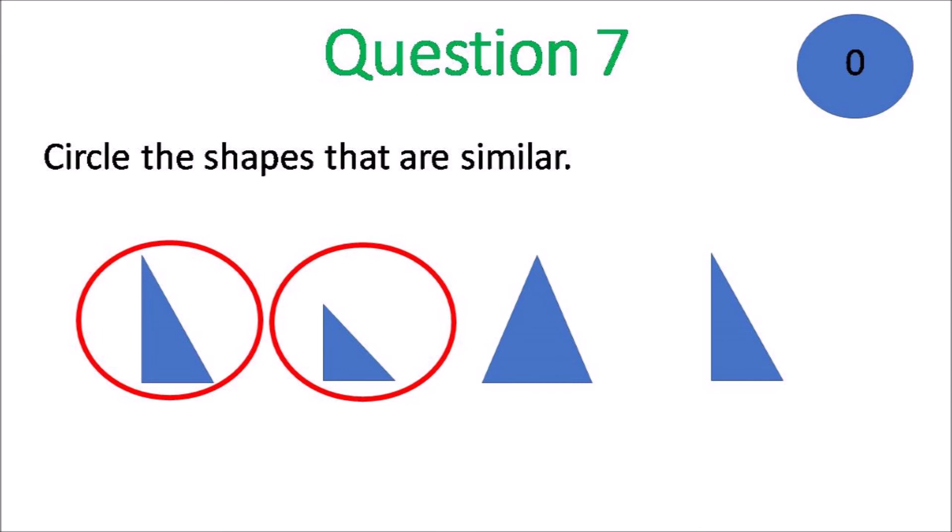Circle the shapes that are similar, it would be the first two, those two are right angle triangles. It cannot be the last one because that would be congruent to the first one. So only those two are similar.